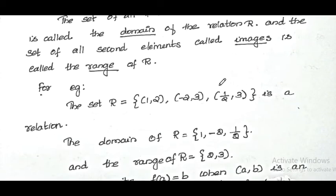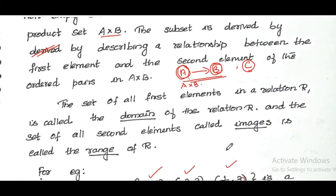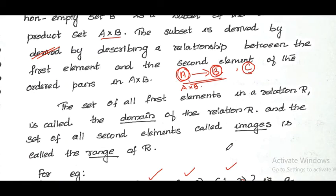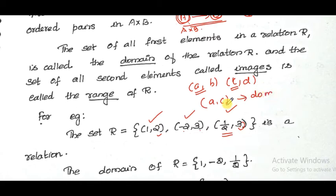For example, if I consider a relation like {(1,2), (-2,3), (1/2, 3)}, the domain is {1, -2, 1/2} — the first set of elements — and the range is {2, 3}. Since 3 is repeating, the range is {2, 3}. To summarize: the set of all first elements in a relation is the domain; elements denoted a, c form the domain, and elements denoted b, d form the range.